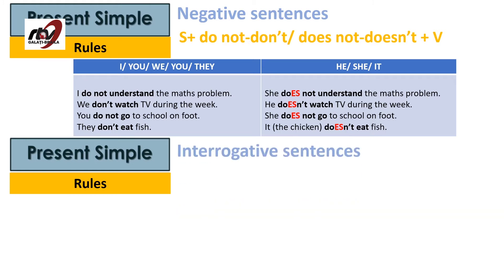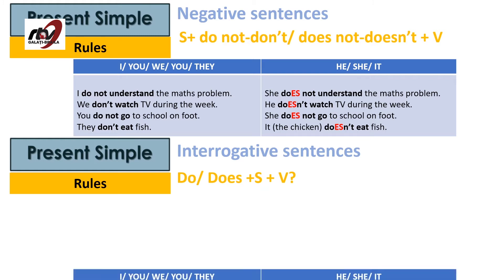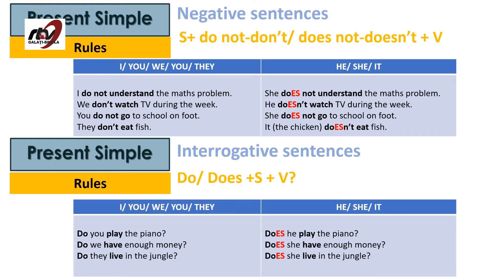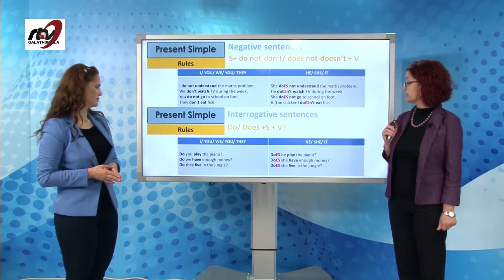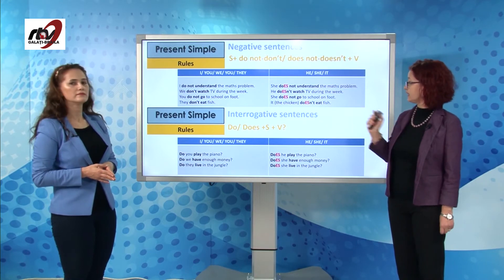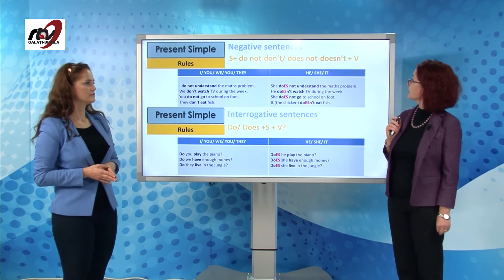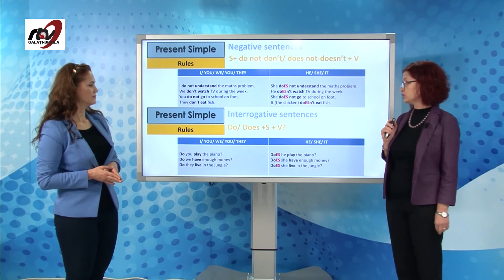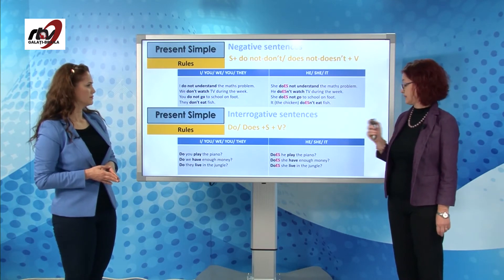The interrogative sentence has a switch between the auxiliary, the subject and the verb — so we have do or does first, then the subject and the verb. Do you play the piano? Does he play the piano? Do we have enough money? Does she have enough money? Do they live in the jungle? Does she live in the jungle? For the negative and interrogative sentences, the ES goes after the auxiliary do — it turns into does.